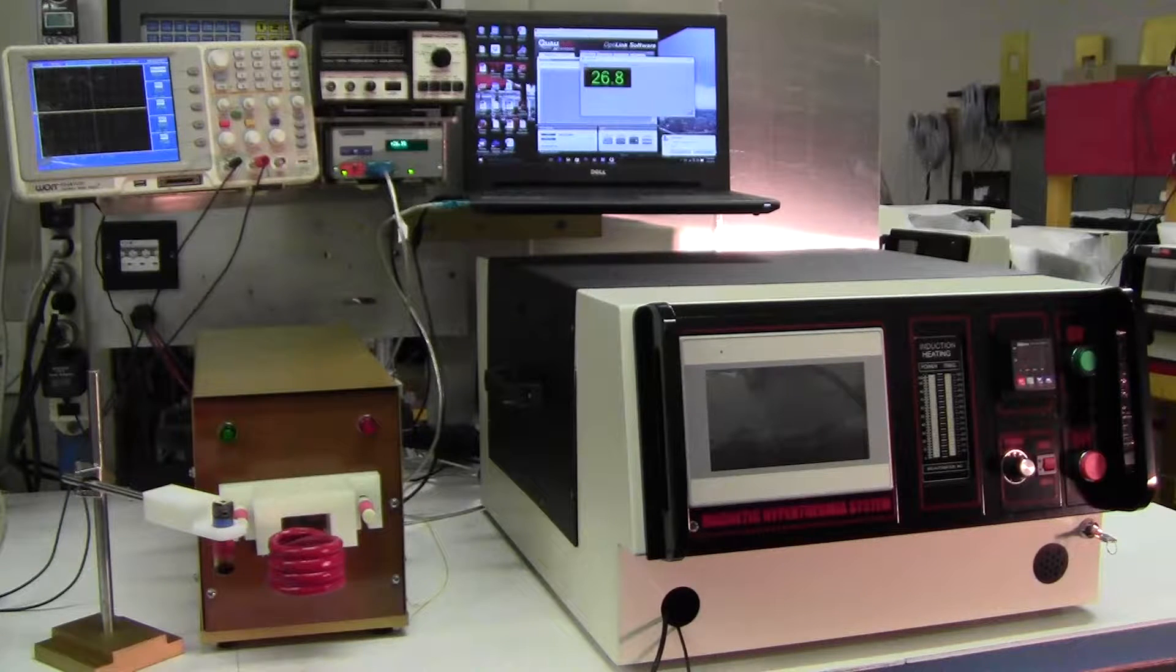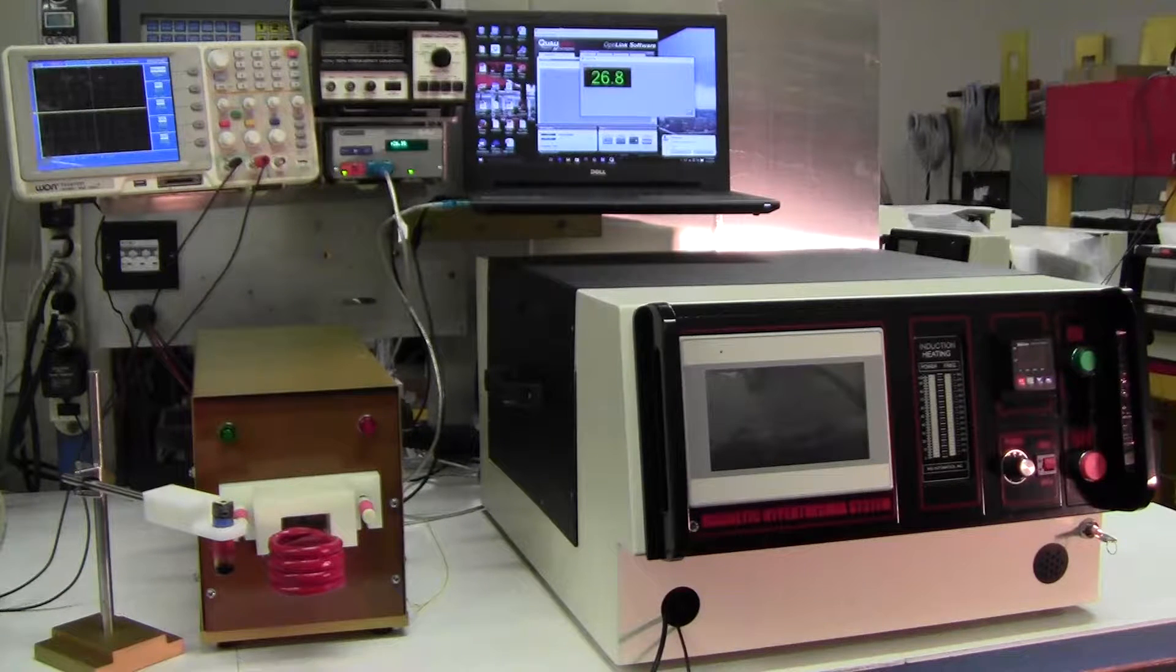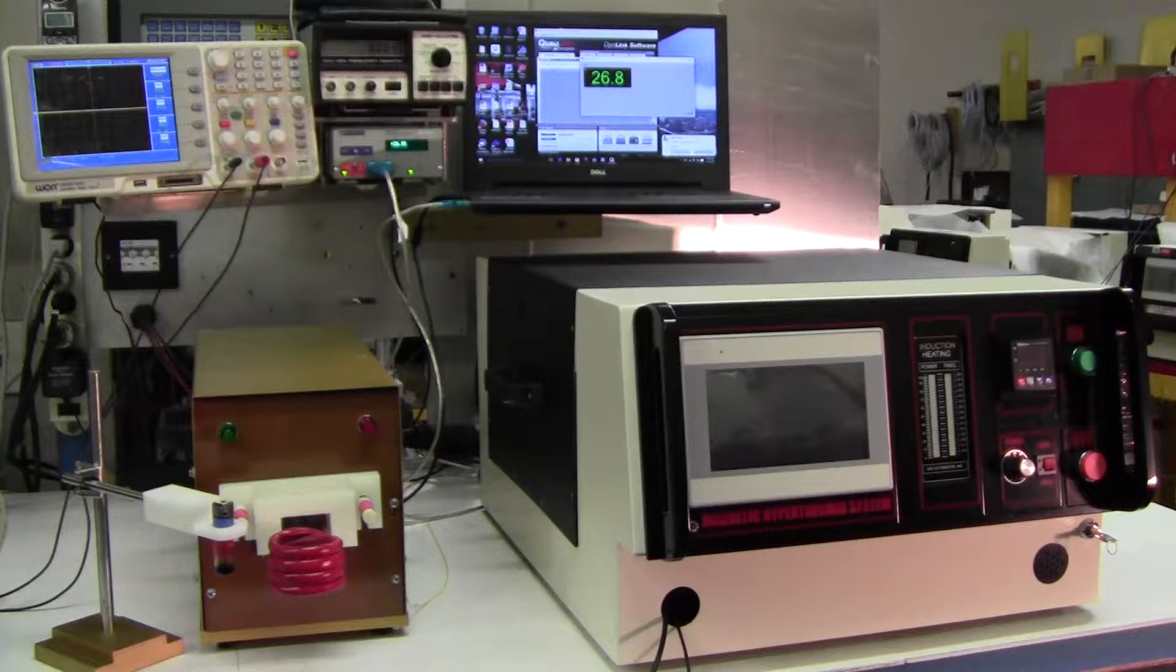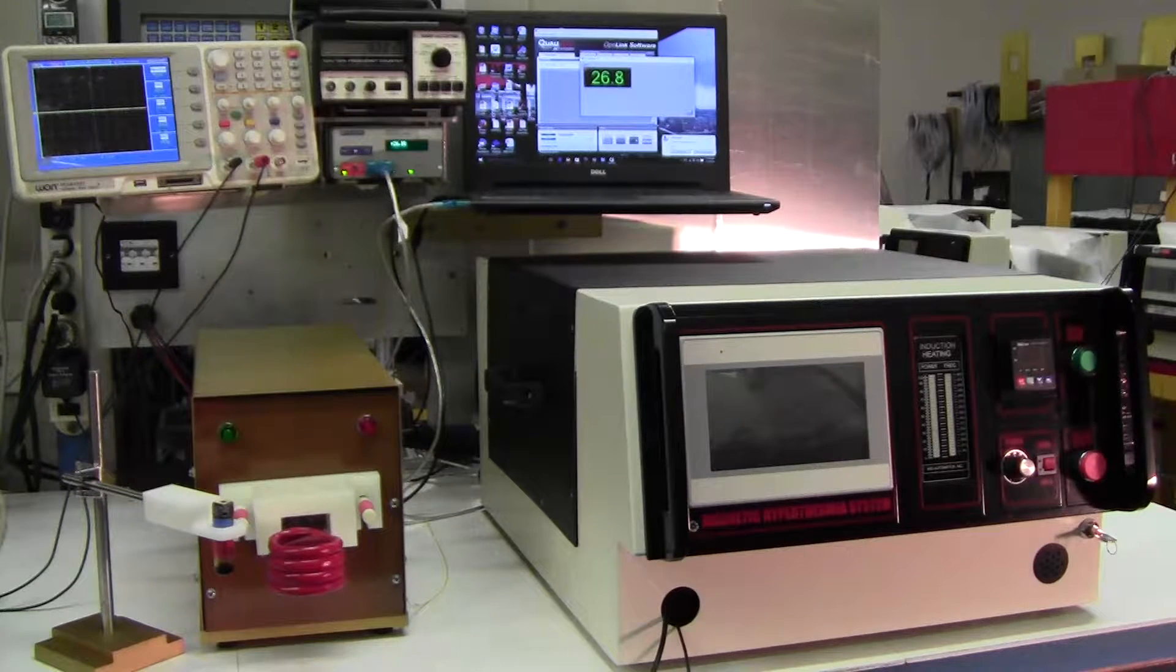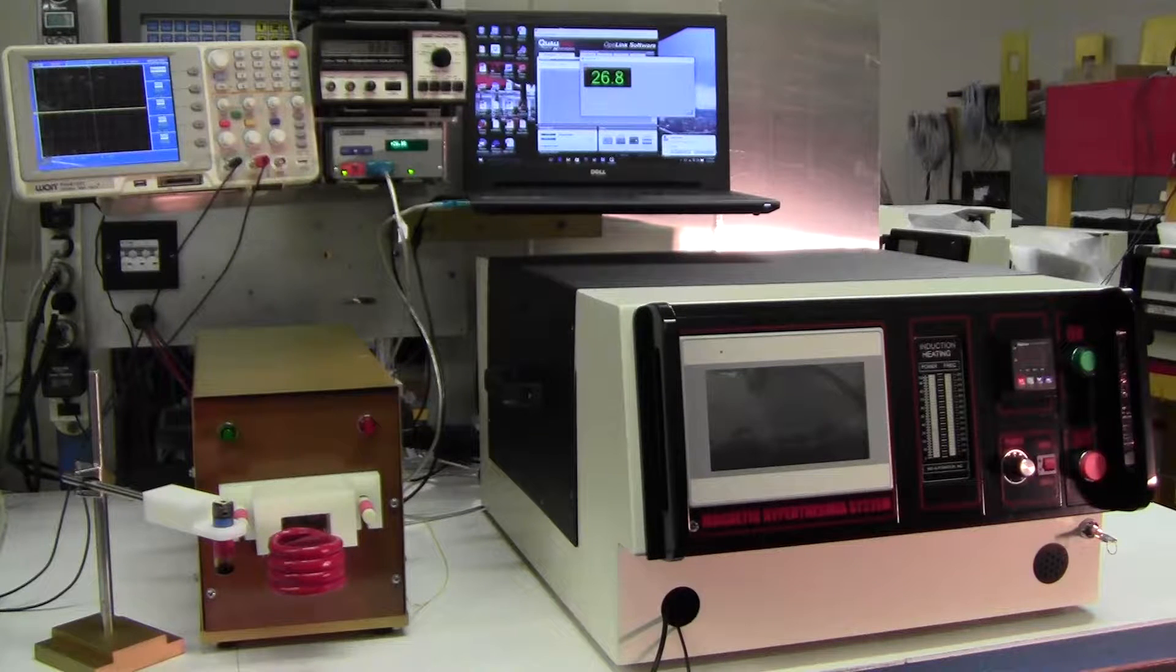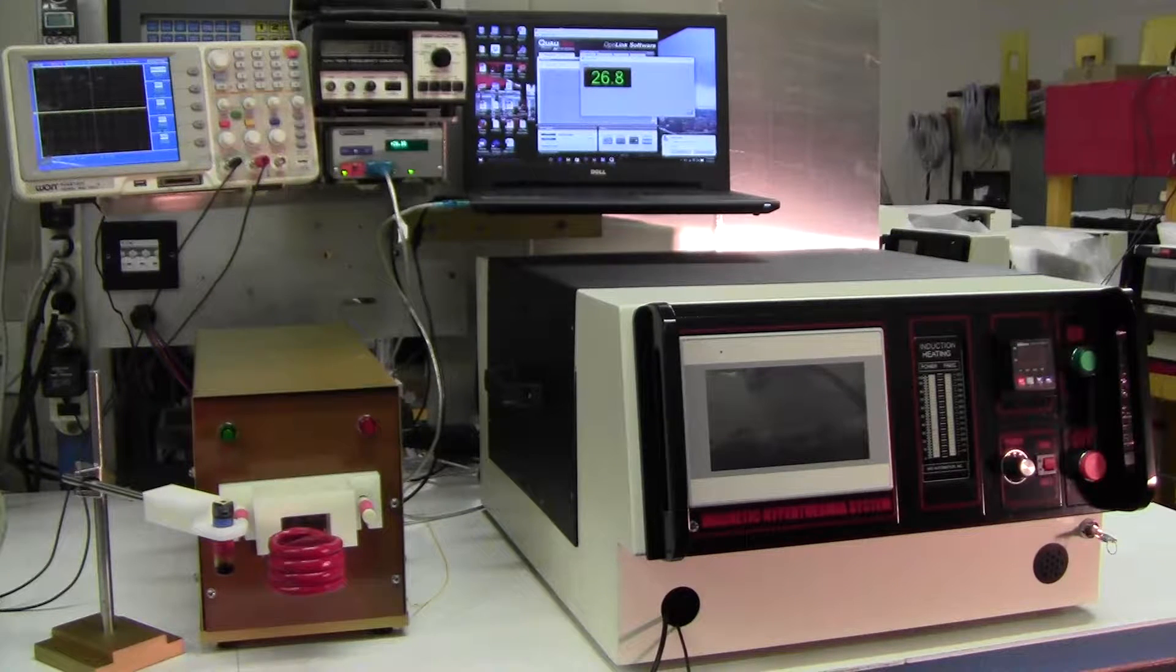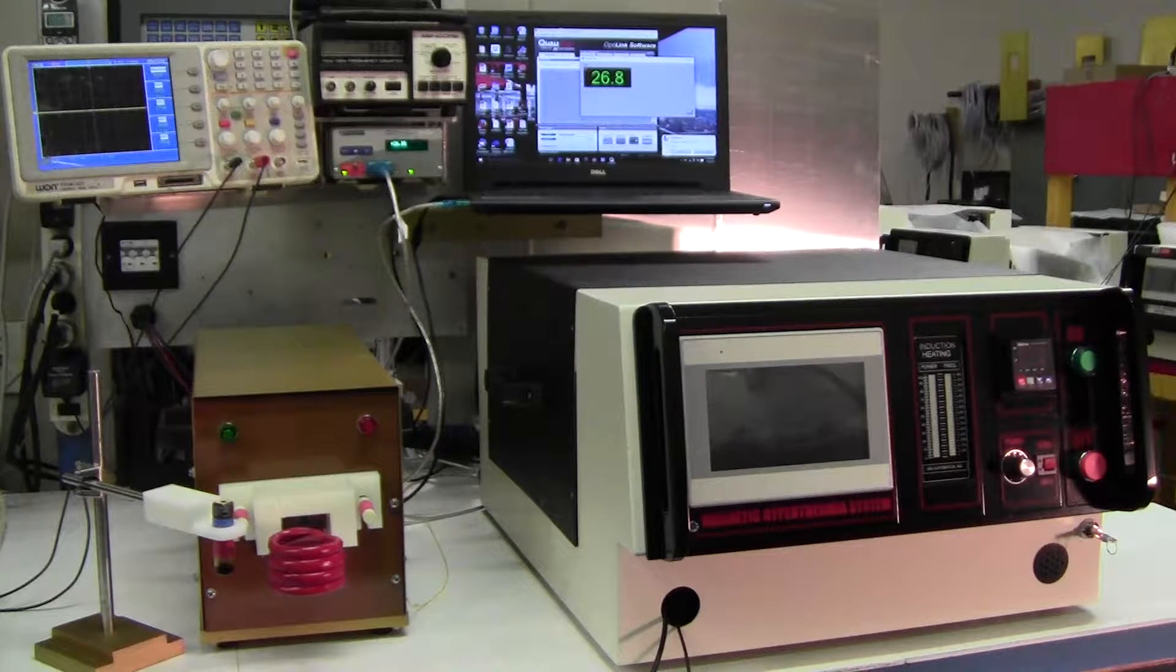The treatment of both animals and potentially humans require different types of heating coils. What we'll be using today is a round heating coil operating at around 410 kilohertz to demonstrate the heating power of the unit. So I'll turn the machine on.